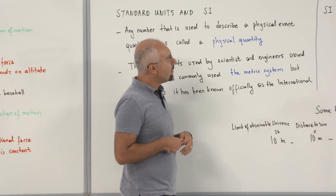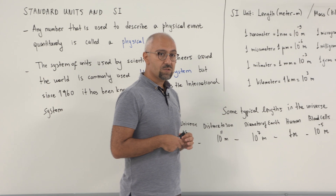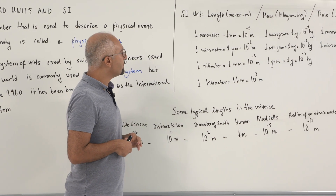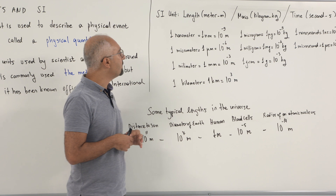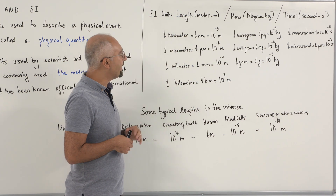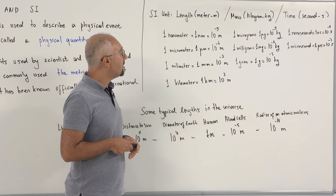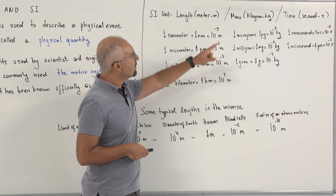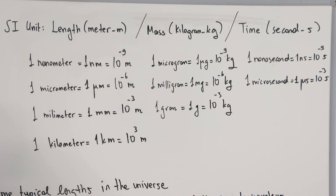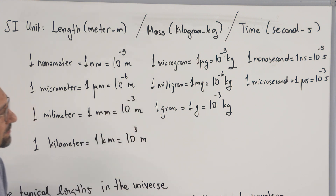What is the SI unit? There are three fundamental measurements we quantify in physics. The first is length, with the unit meter, abbreviated M. The second is mass, with the unit kilogram, abbreviated KG. And of course there is time, with the unit second, abbreviated S.